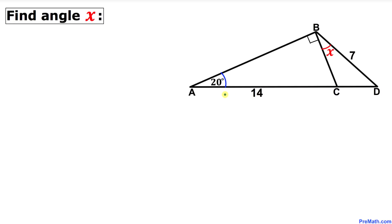Welcome to pre-math. In this tutorial we have triangle ABD such that the side length BD is 7 units, side length AC is 14, and angle A is 20 degrees. Moreover, a right triangle ABC is placed inside this triangle and we are going to calculate angle X.